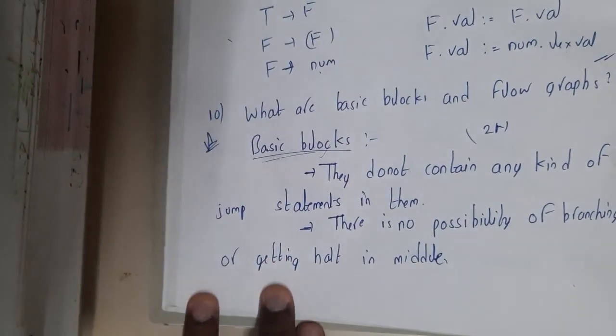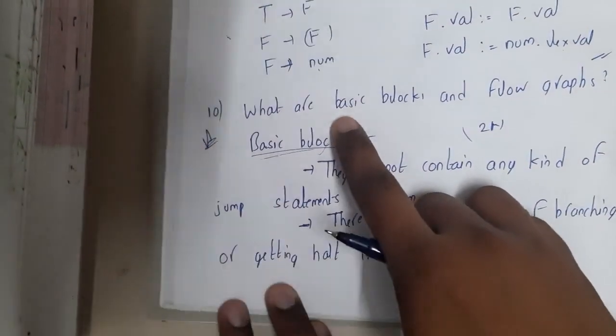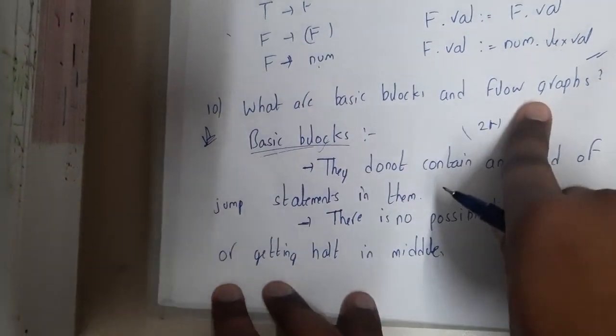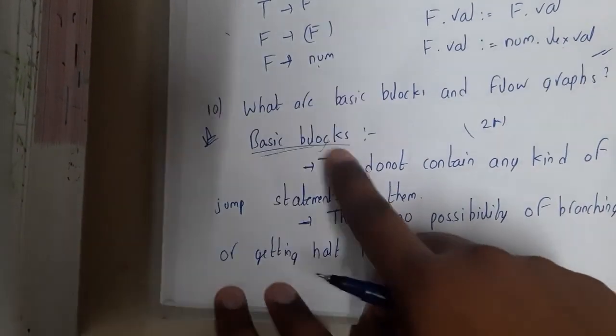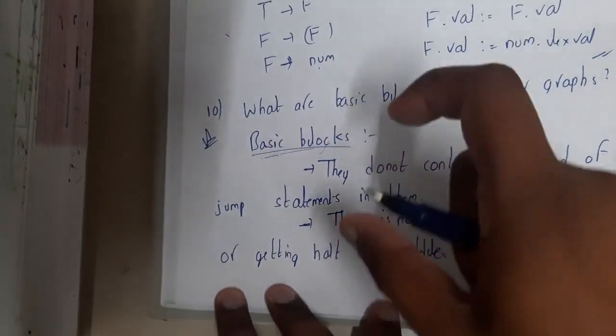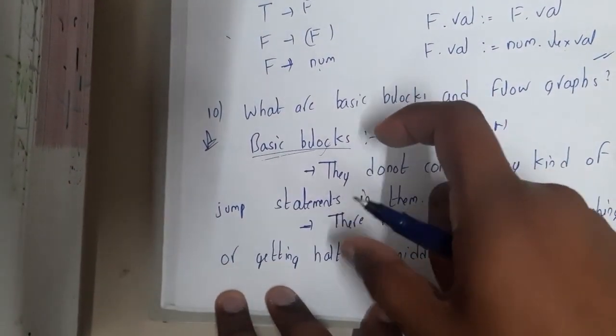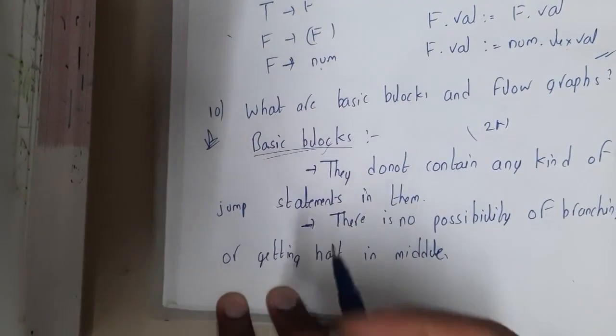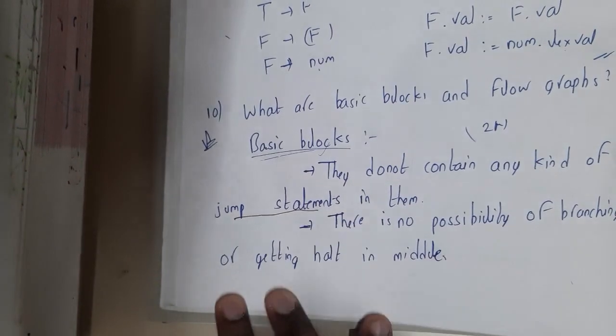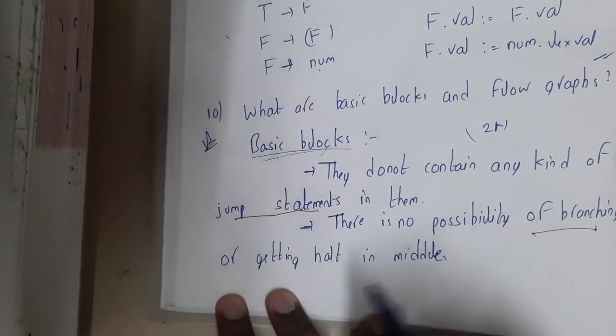Hello guys, we are back with our next lecture. In this lecture, let us go through basic blocks and flow graphs. Basically, basic blocks are nothing but blocks in which there are no jump statements. It should not contain any jump statements or branching statements.